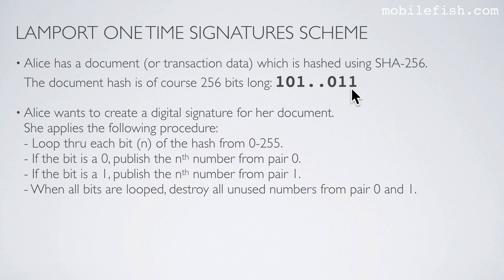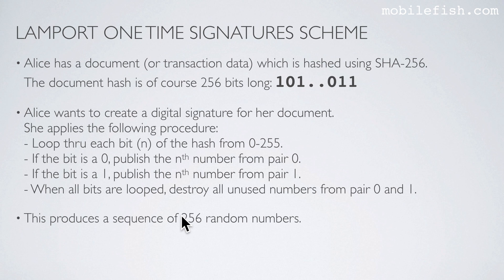When all bits are looped, destroy all unused numbers from pair 0 and pair 1. This produces a sequence of 256 random numbers.